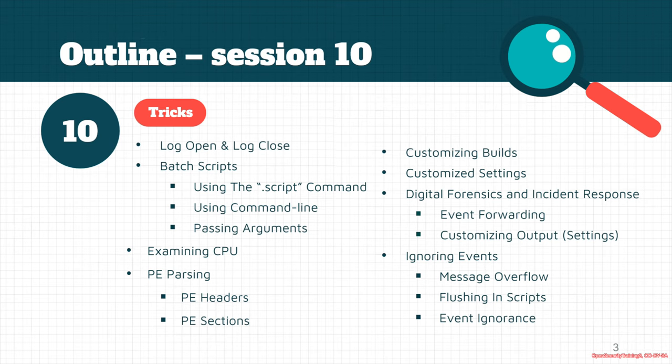Let's see a brief outline of what we want to talk about in this section. First, we see how log open and log close works in HyperDbg. Then we see some of the batch scripts you can use, and how we can examine different processor features. Then we have PE parsing, how to customize the builds of HyperDbg, and how HyperDbg can be used in the DFIR community. We'll see how ignoring events work, and at last, we will explore how to defeat some of the anti-debugging methods.